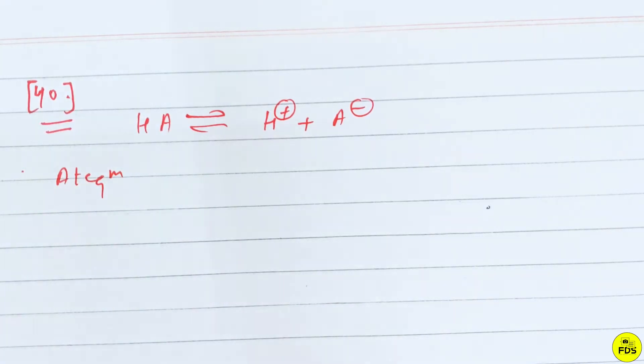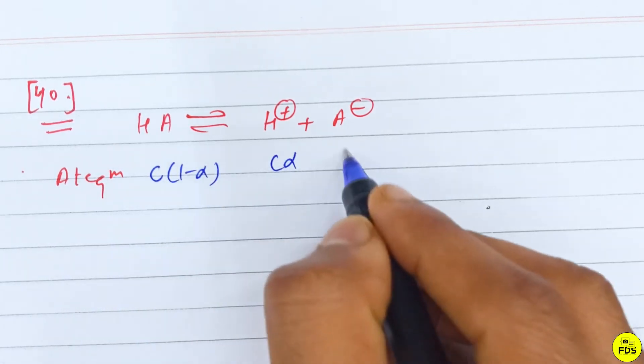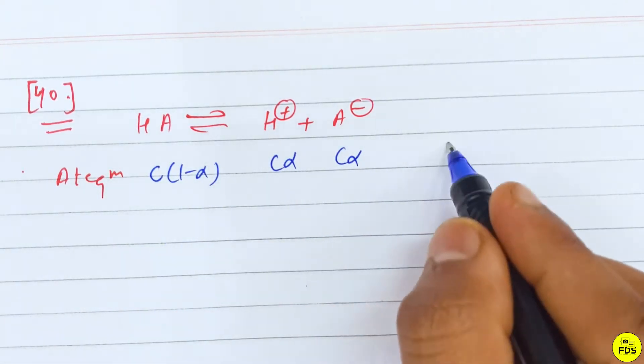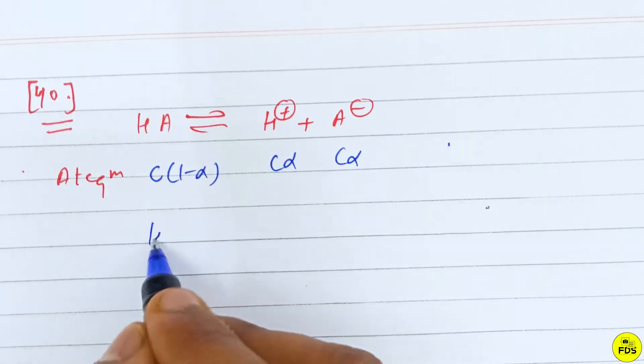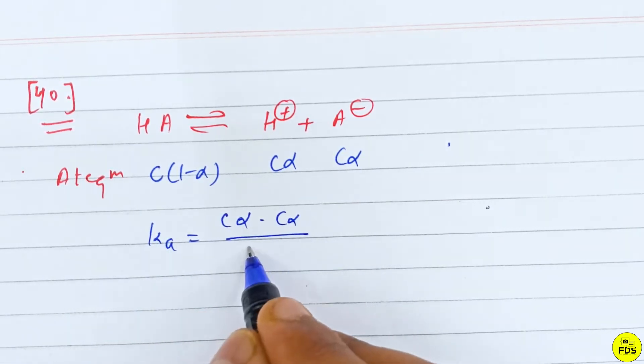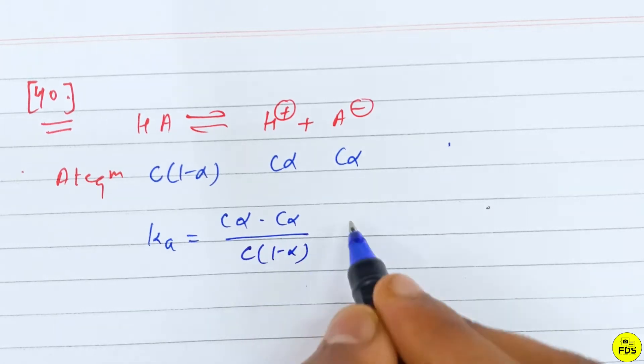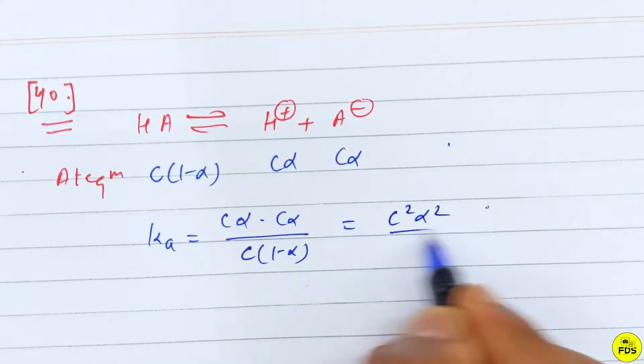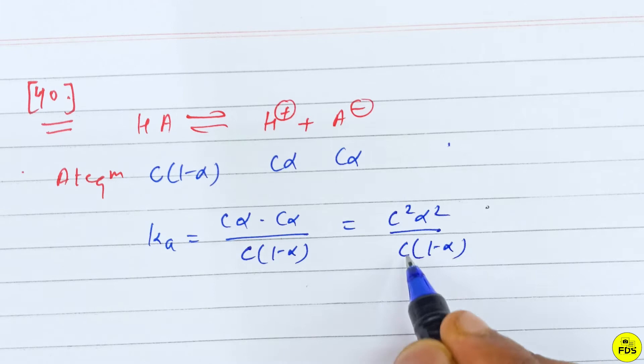The concentration is C(1-alpha), C alpha, C alpha. This produces Ka value: C alpha times C alpha upon C(1-alpha), which simplifies to C alpha squared over (1-alpha).